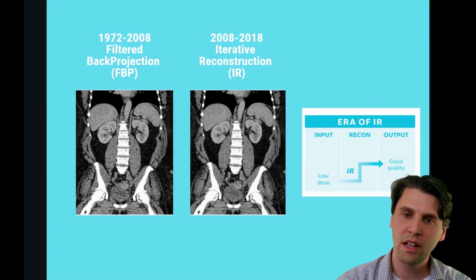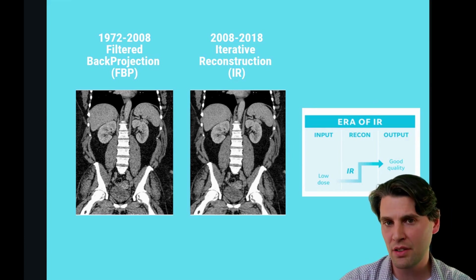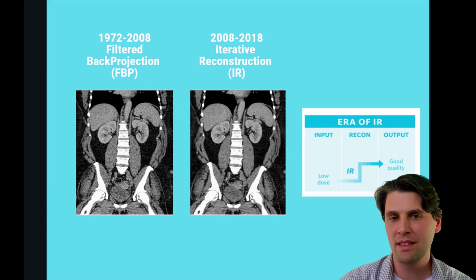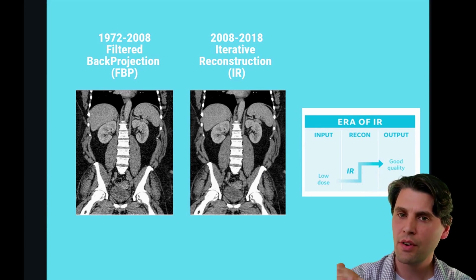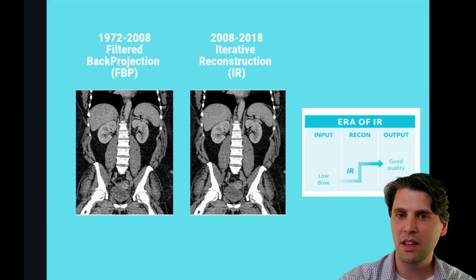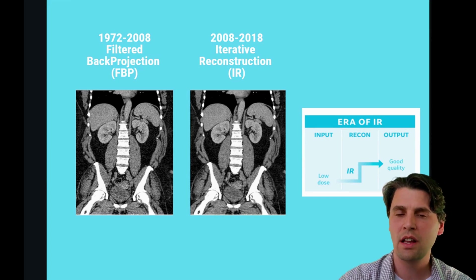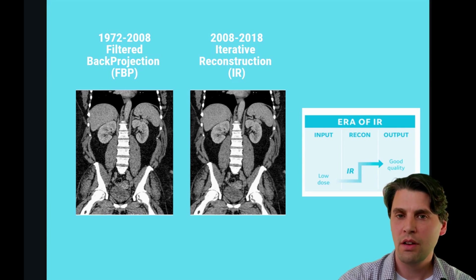This is what ushered in the era of iterative reconstruction, because in iterative reconstruction you can build in what's called image regularization — a way to denoise the data — so that at lower doses you can achieve good image quality. That era came in in 2008, starting with ASIR, Adaptive Statistical Iterative Reconstruction. Shortly thereafter, GE also introduced VIBE, which is a full model-based iterative reconstruction.